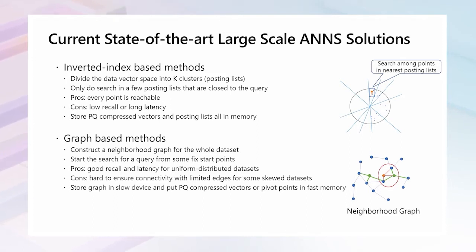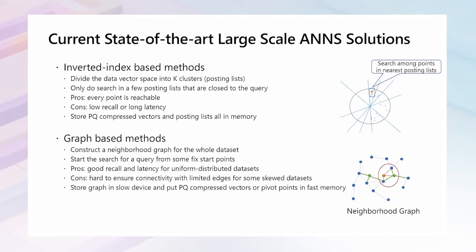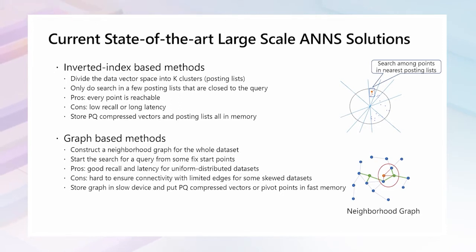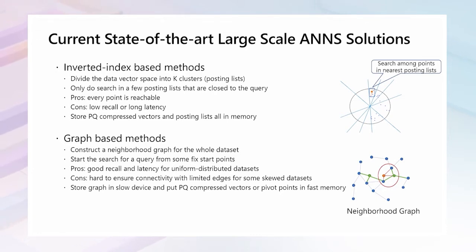The inverted index-based methods divide vectors into k clusters and only search in a few clusters that are close to the query. The advantage is that every point is reachable. However, since there exist some long posting lists, putting all the posting lists on disk makes query latency hard to meet. Therefore, most existing solutions store PQ-compressed vectors and the posting lists entirely in memory. Unfortunately, recall is very low due to the additional lossy data compression.